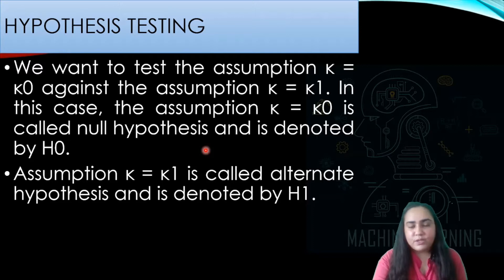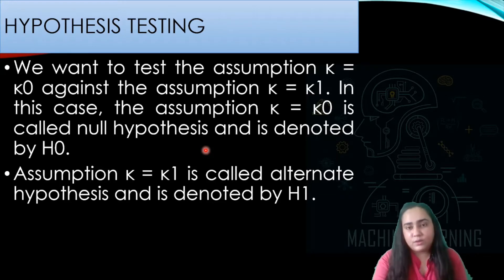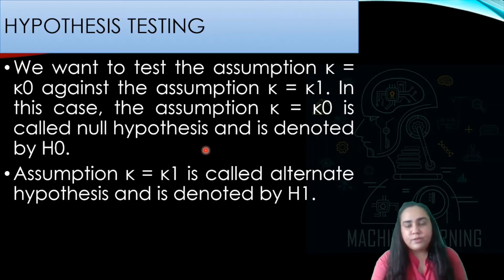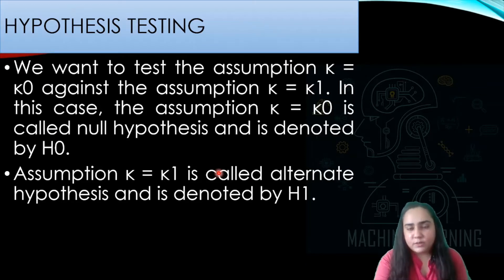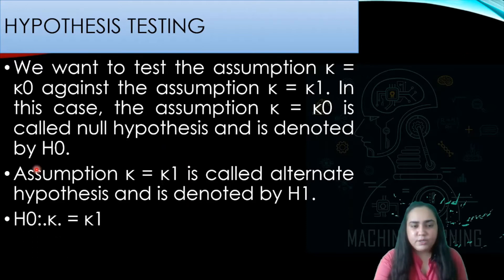For example, if you're trying to prove that you have a drug or medicine for curing cancer, the first thing you have to do is take a null hypothesis that says the drug does not cure cancer, because that is the default situation — you haven't proved anything yet. When you're trying to prove that your drug is working, that would be your alternate hypothesis. You have to try to prove your alternate hypothesis, and if you fail to do so, the null hypothesis is what is actually correct and is accepted.